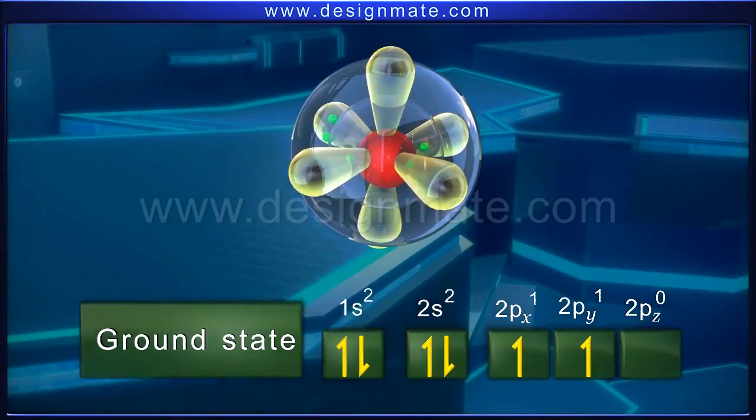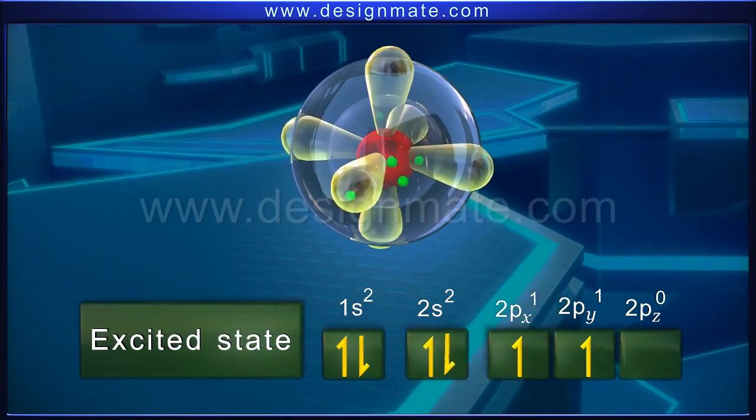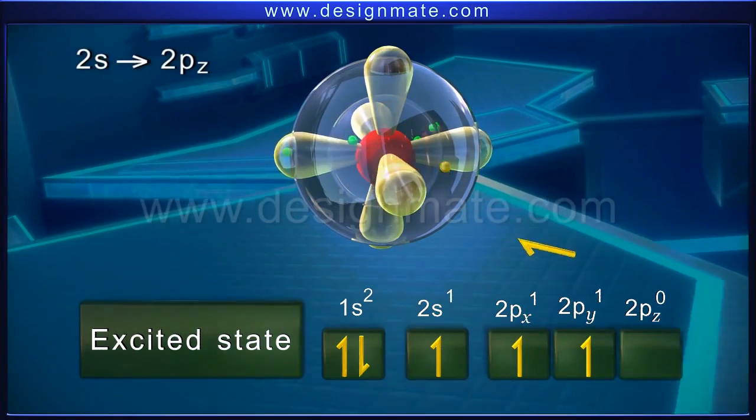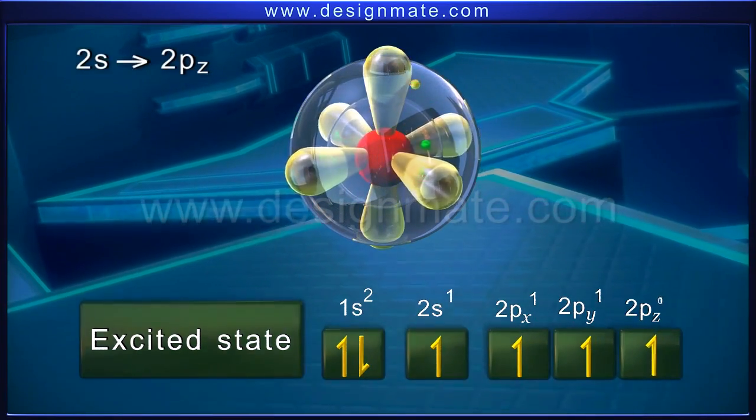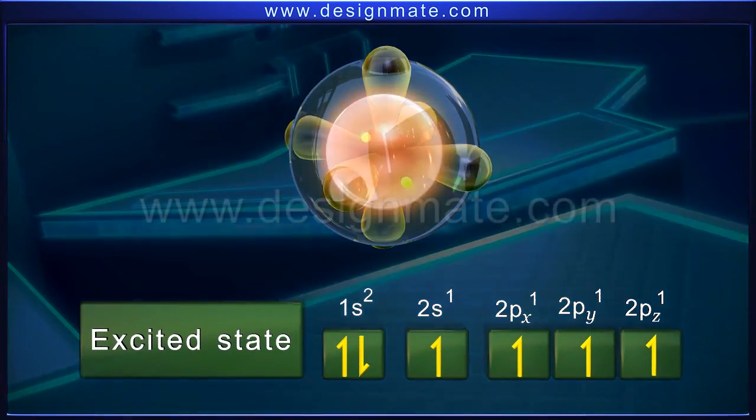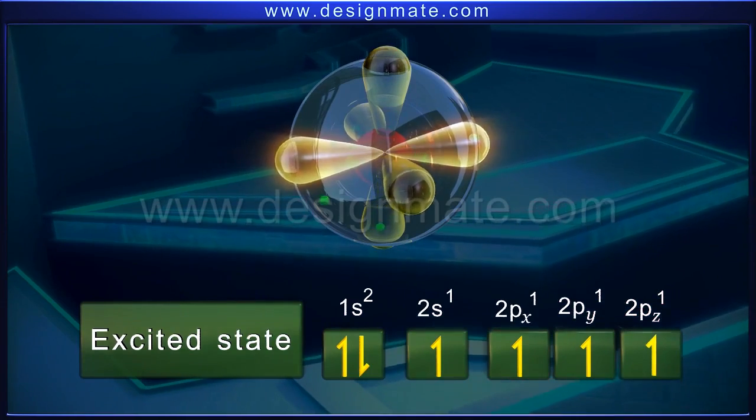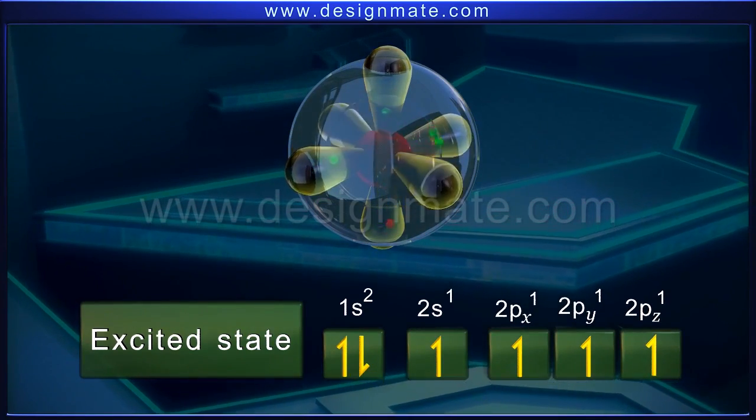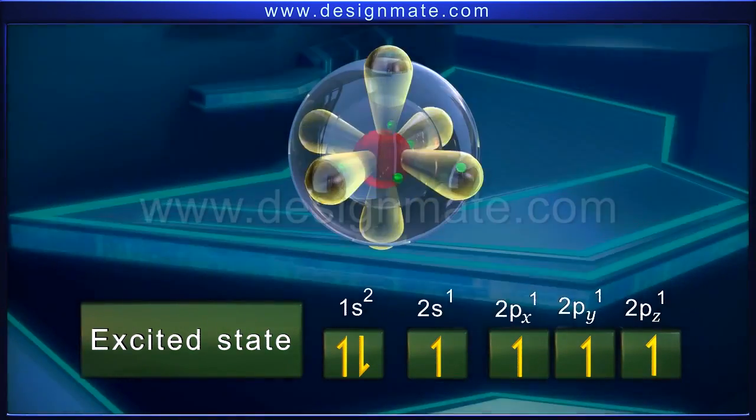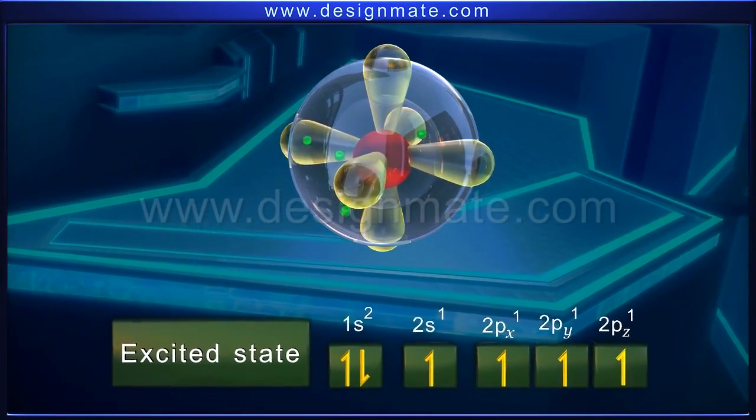On excitation, an electron jumps from the 2s orbital to the 2pz orbital, resulting in an electronic configuration of 1s2, 2s1, 2px1, 2py1, 2pz1.